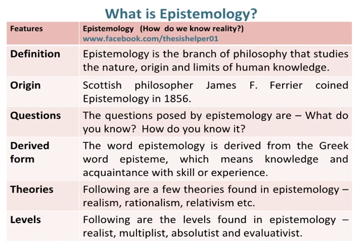Following are the levels found in epistemology: realist, multiplist, absolutist, and evaluativist.